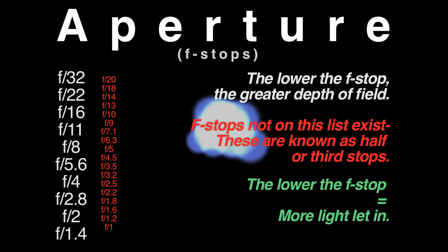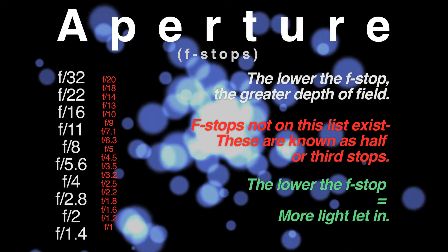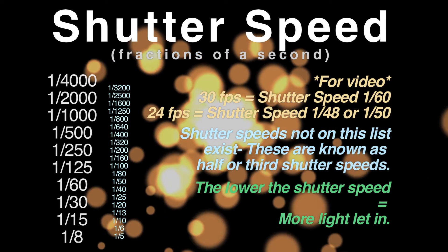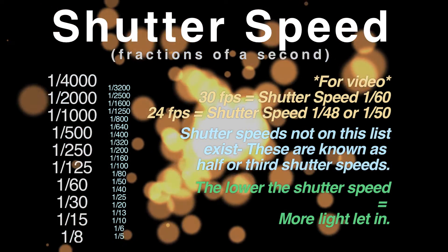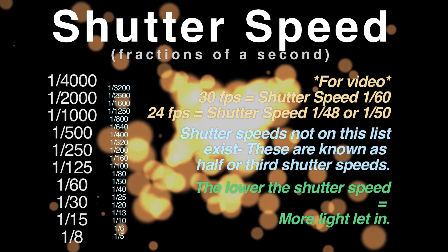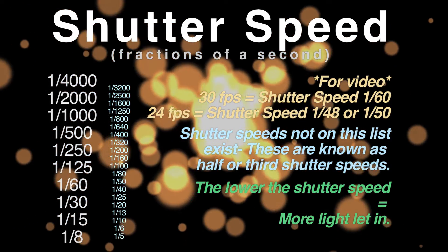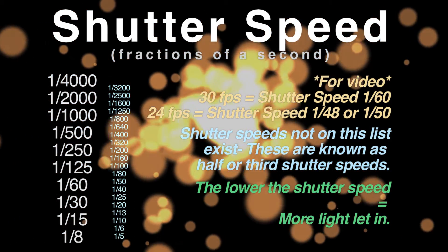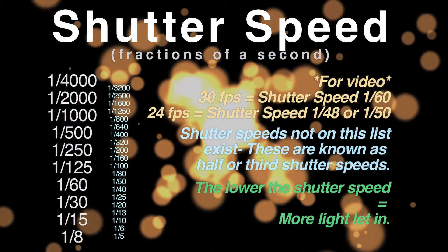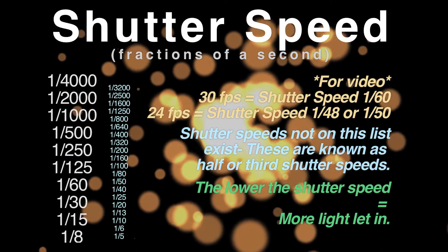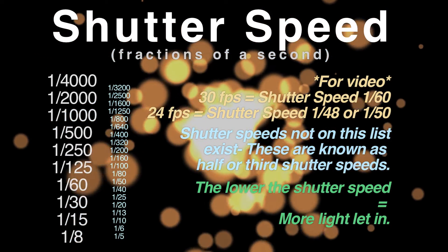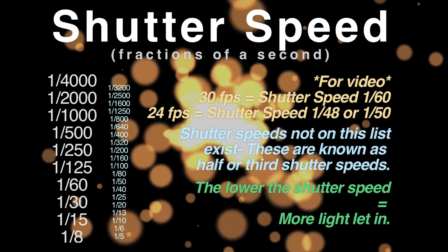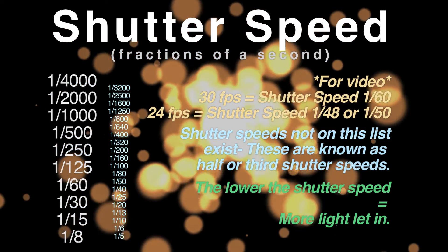As I did with the f-stops for aperture, I've laid out all the increments of fractions of a second for shutter speed on the screen. The lower the shutter speed, the more light you let in. But there is a special rule for shutter speed that must always be followed unless you absolutely know what you're doing: your shutter speed must be double your frame rate. So if you're shooting at 30 frames per second, your shutter speed should be 1/60th of a second. If you're shooting at 24 frames per second, it needs to be 1/48th or as close as possible — most cameras have 1/50th. This needs to be locked down and you should never change it throughout filming.